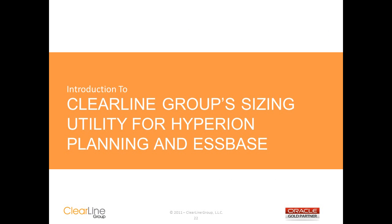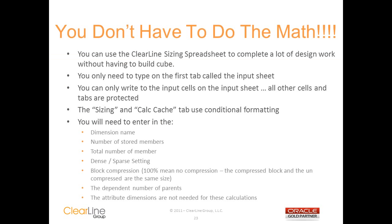The Clearline Group Sizing Utility for Hyperion Planning and S-Base does all the calculations for you, so you don't have to remember the details of all the math. The utility is just a three-tab spreadsheet. You just have to enter your cube's information into the white cells on the first tab — all of the other cells and tabs are protected. Just type in the dimension names, the number of stored members, the total number of members per dimension, and the dense and sparse settings. Then enter your estimated block size after compression — 10 or 20% is a good place to start if you're not sure. The last step is to enter the total number of dependent parents, which is 1 plus the total number of alternate rollups in your anchor dimension. This sample does not have any alternate rollups, so we're going to leave it at 1.